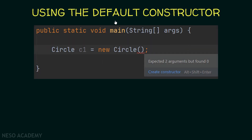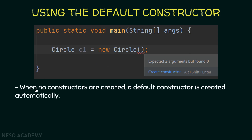Now let's try to use the default constructor by creating a Circle c1 with new Circle and no arguments. We get an error: 'expected two arguments but found zero.' Our Circle class no longer has a default constructor — it only has the constructor that takes two arguments.